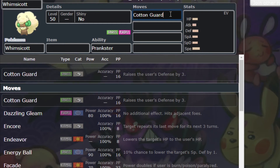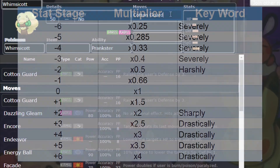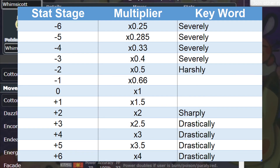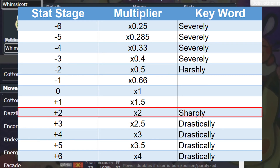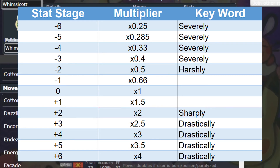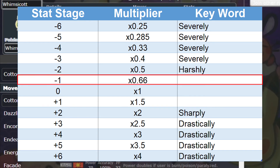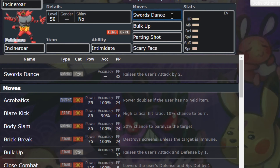Finally, let's talk about terminology. In the competitive scene, people refer to stat stages by the number of stages accompanied with a plus or a minus. If your Pokémon has used Swords Dance, it increased its stat stage by 2 — we refer to that as plus 2. On the other hand, if your opponent has lost one stat stage of attack from Parting Shot, we would refer to that as minus 1. While negative and positive stat stage changes affect Pokémon on different multipliers, they interact on the same numerical scale.